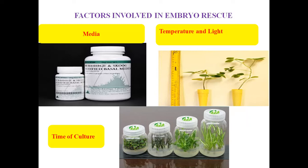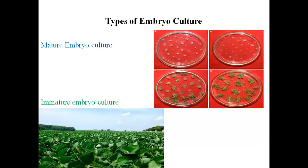There are some factors involved in embryo rescue. First is the media — we can use MS media, nutrient medium, White's media, or Brown's media, depending on the type of plant. Next is temperature and light — these are controlled conditions in which the plant will grow and must be adjusted according to the species. The time of culture is also very important; if environmental conditions are not appropriate when culturing, the culture will fail, so timing must be exact and appropriate for the plant species.